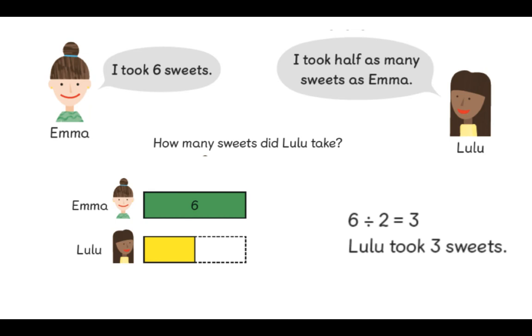Could you pause the video and explain why my number sentence is correct? My number sentence is correct because when we half, we divide something by two. So I needed to half the amount of sweets Emma had. I needed to divide it by two.